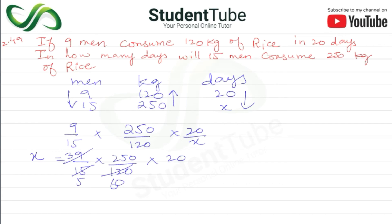Continuing: 2 ones are 2, 2 twos are 4, and 1 two-fives are 10. Then 20, 20 — 2 threes are 6, so 60. Then 5 ones are 5, 5 twos are 10, 5 fives are 25. So x equals 25.